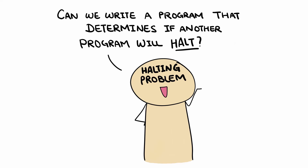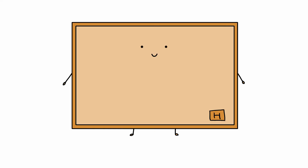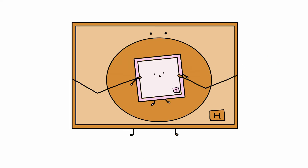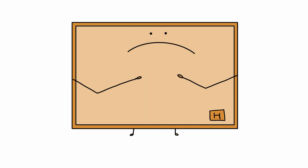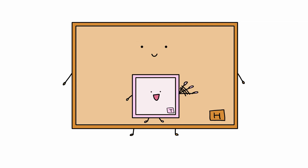In case you forgot, the halting problem asks whether we can write a program that determines if another program halts. Now we build a program, which we call H, that uses program T to solve the halting problem. We know this actually cannot be done, but we assume it can be for the sake of contradiction, because we want to show that we can reduce the halting problem to the truth problem.